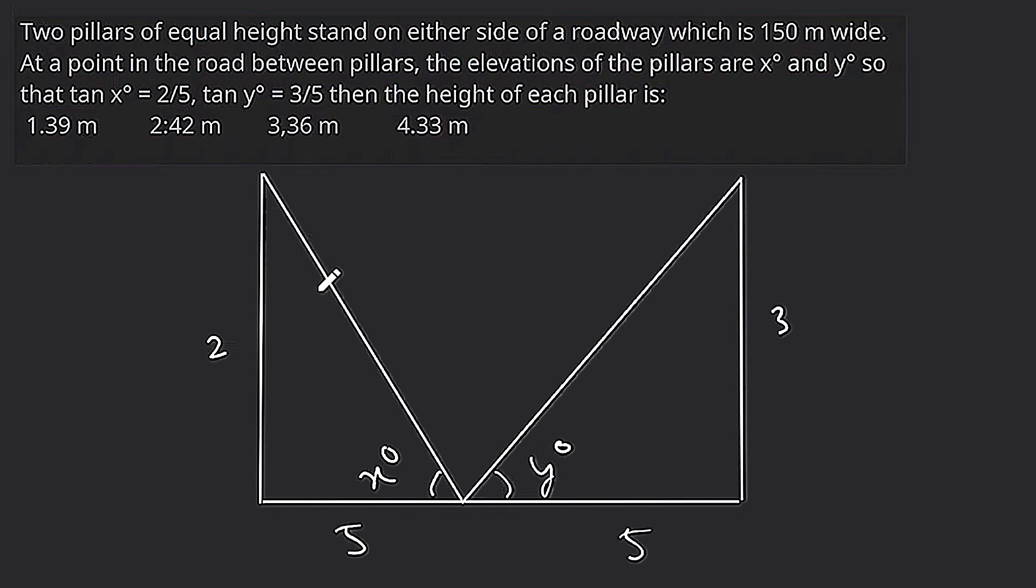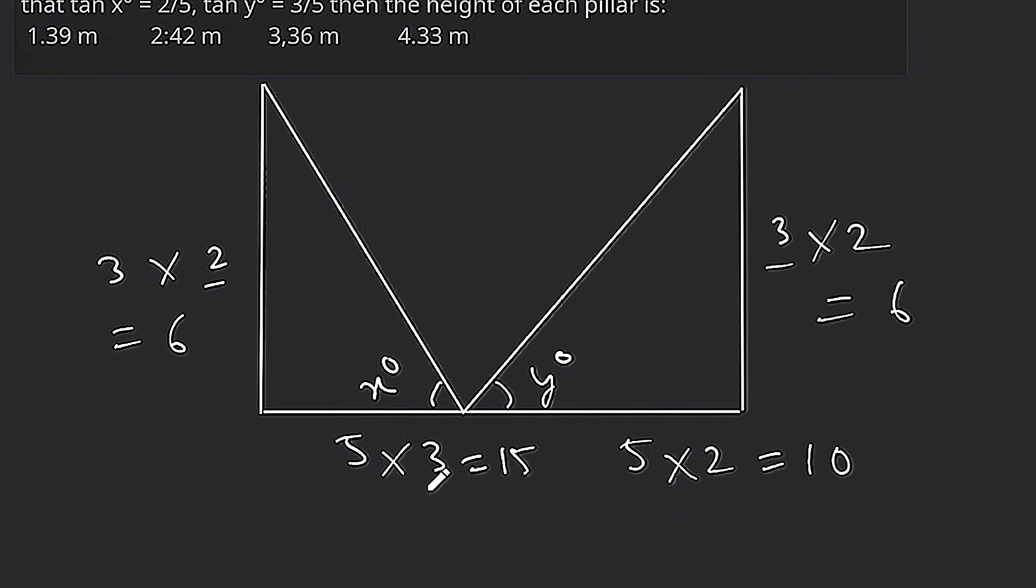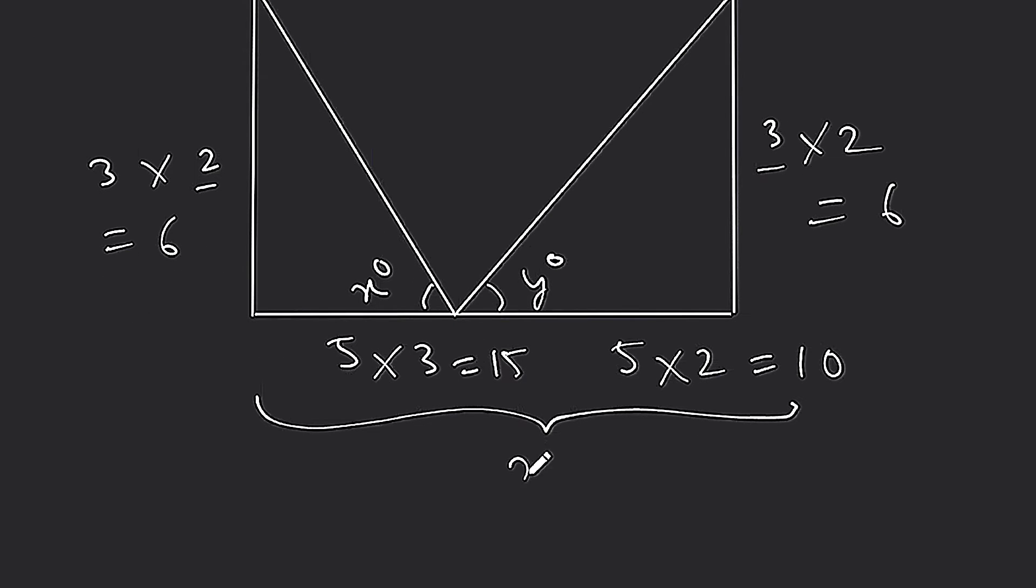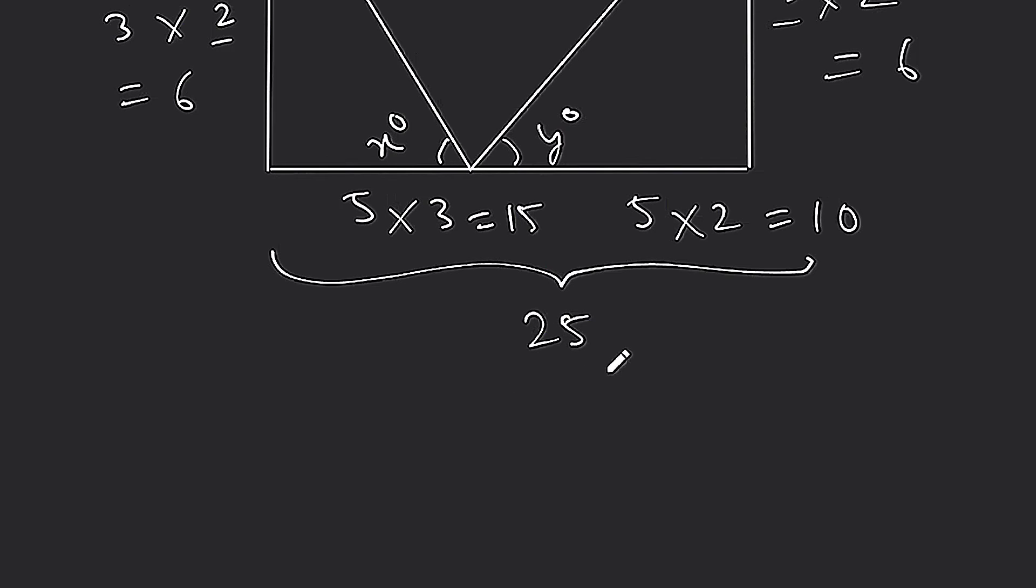Now, the question about height - heights are equal. Here, 3 times 2 is 6. Here, 3 times 2 is 6. Then 3 times 3 is 15, 5 times 2 is 10. Now if you add, 15 plus 10 is 25. This distance 25, question says 150 meter wide, but here 25, so this is 150 meter, so this is 6 times.